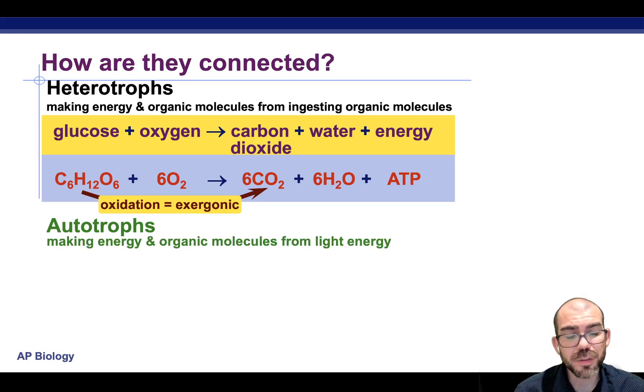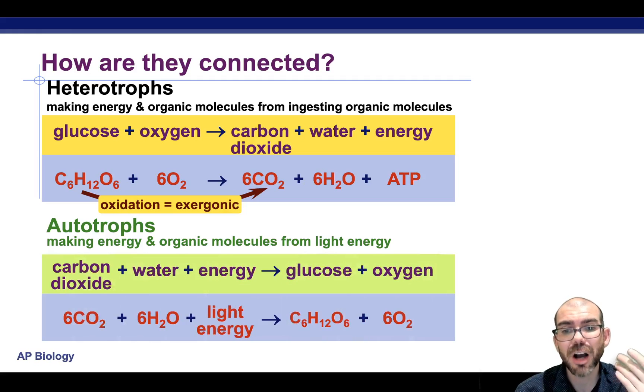With an autotroph, something like photosynthesis, we have the exact opposite. Instead of releasing CO2 and water, we're taking them in. And instead of entering with glucose and oxygen, we're releasing them.